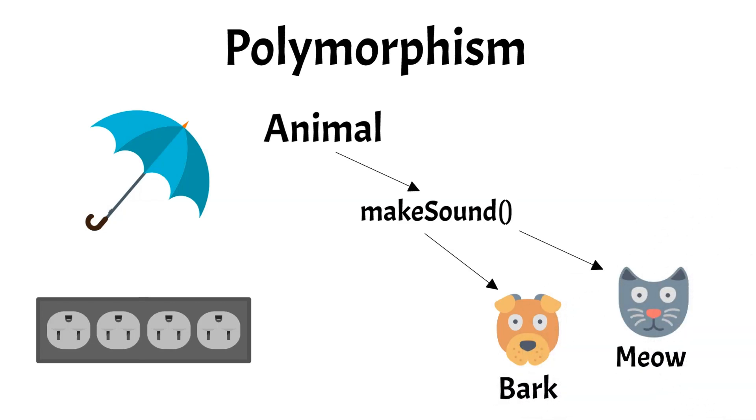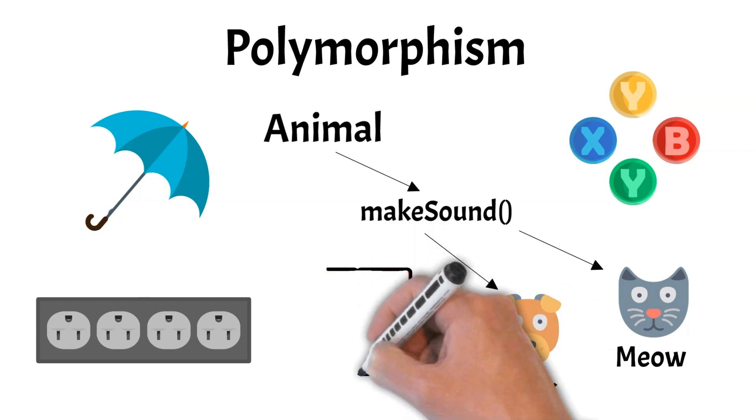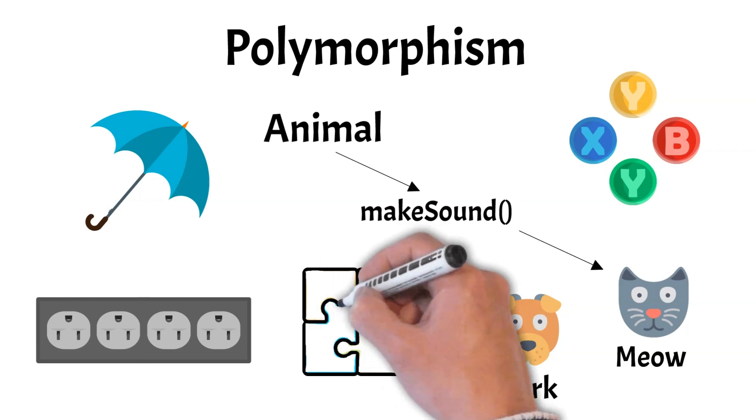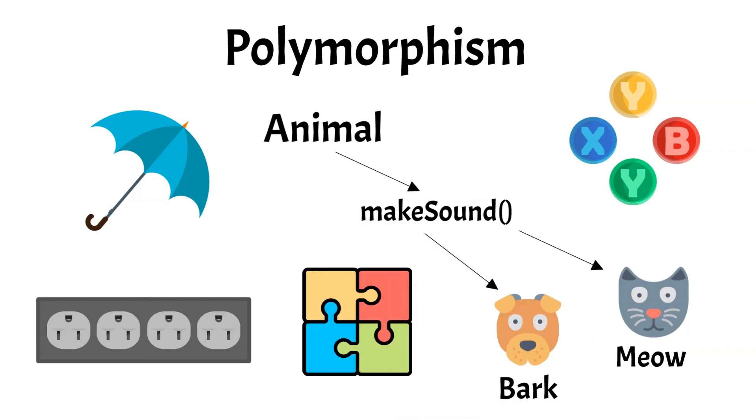Polymorphism allows you to call make sound on any animal object, and the appropriate method for that specific object type will be executed. This simplifies code management and enhances the ability to extend the code base with new functionality without modifying existing code.